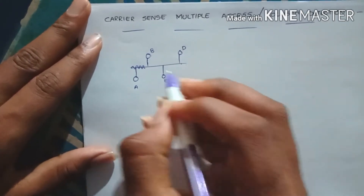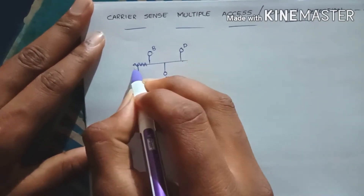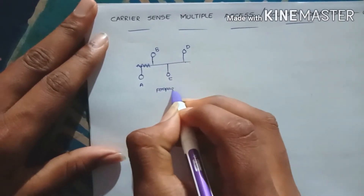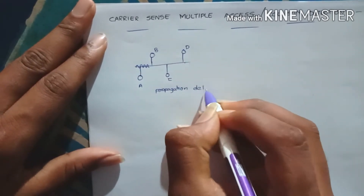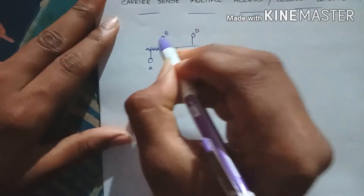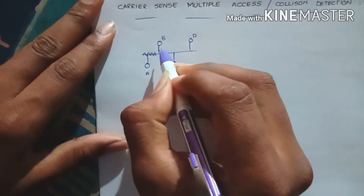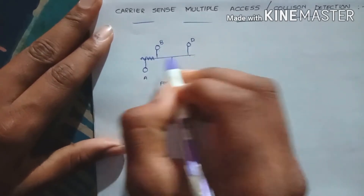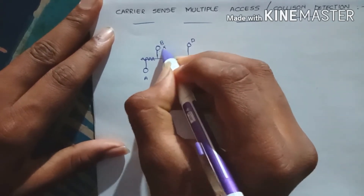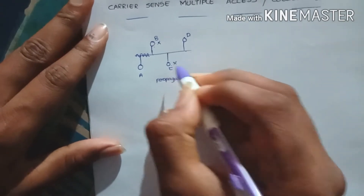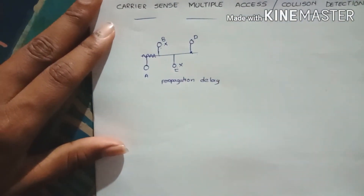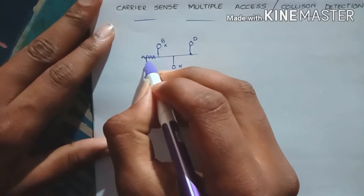In our LAN network, this data has to move in a propagation manner, so there will be a propagation delay. The data from A has to move to destination D. While moving from A to D, it passes through B and C. B rejects the data from A, and C also rejects it, and the data goes on to point D.